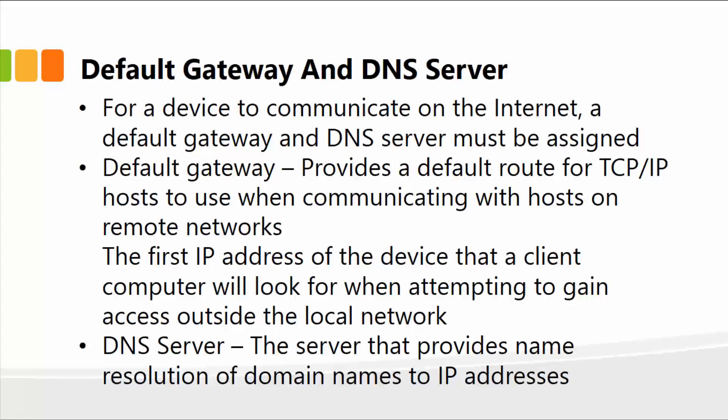The default gateway provides the default route for TCP/IP hosts when communicating with hosts on remote networks. It's the first IP address a client computer looks for when attempting to gain access outside the local network. The DNS server, on the other hand, provides name resolution of domain names to IP addresses — for instance, when you browse to Microsoft.com, that's text, not an IP address.